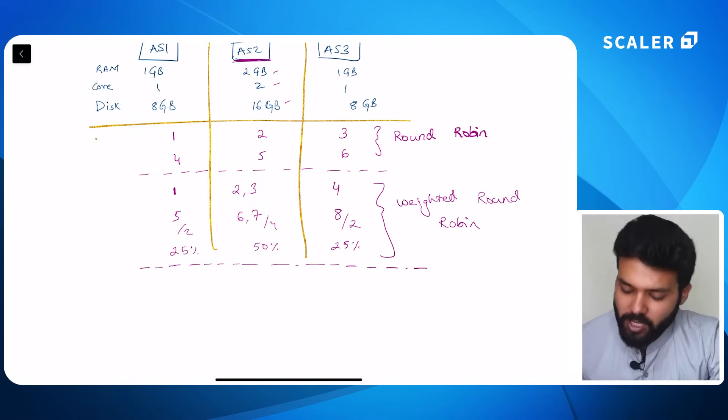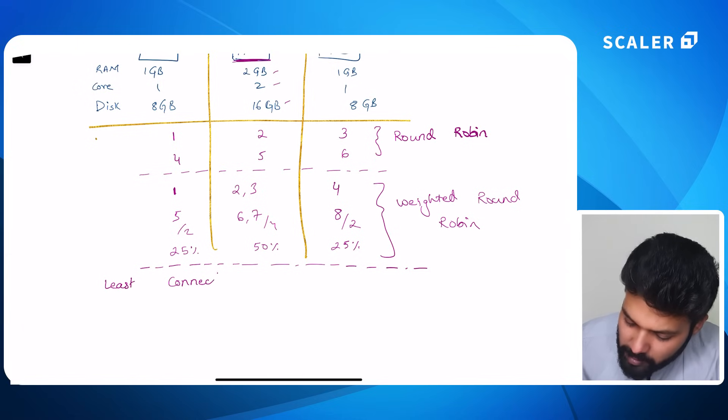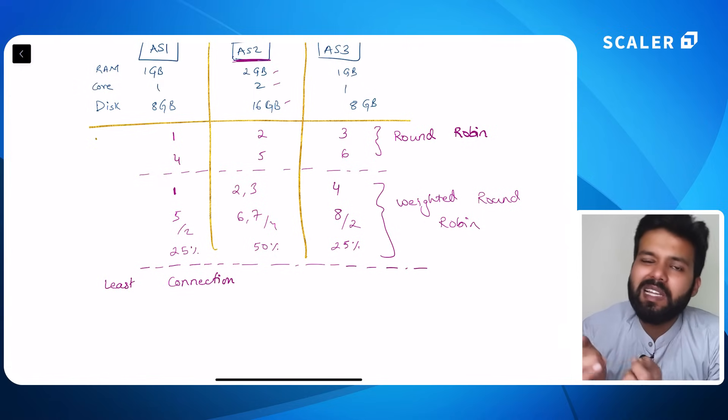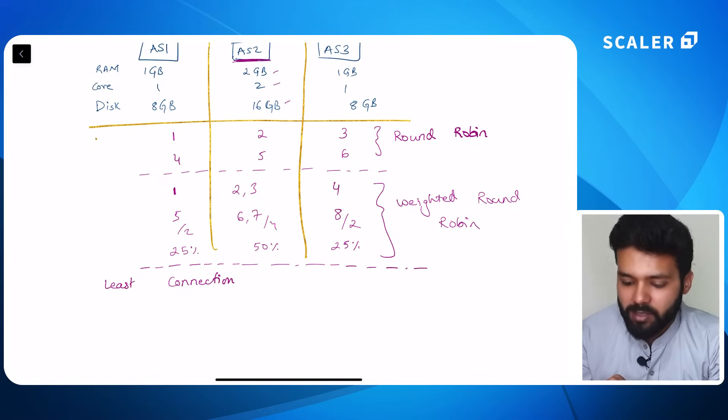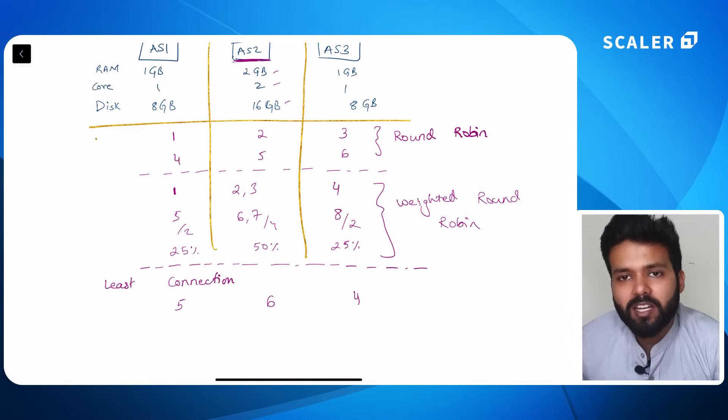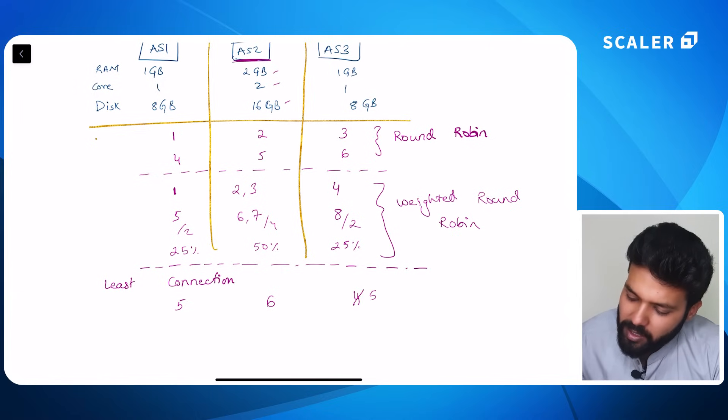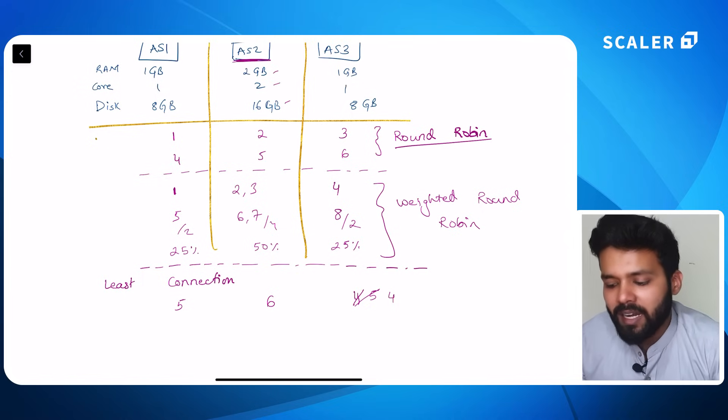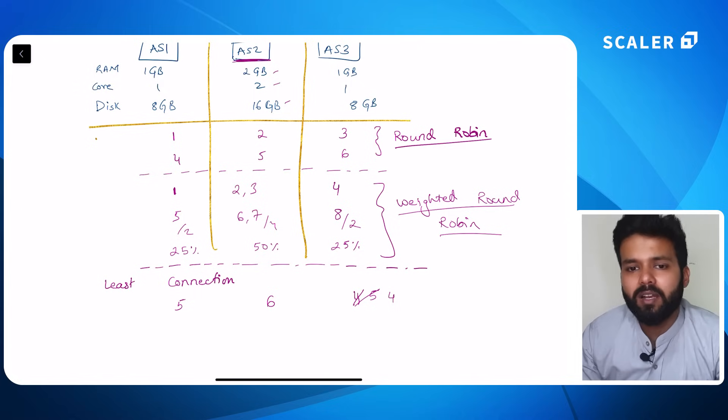The other routing strategy worth mentioning over here is a least connection routing strategy. This least connection looks at the number of active connections that are there with the application server and the server with least number of active connections will get the next new incoming request. For example, if there are 5 connections to application server 1, 6 connections to application server 2 and let's say 4 connections to application server 3, the next incoming request will go to application server 3 and this number will increase to 5. As soon as this request is processed, the number will again decrement to 4. Here also we have the same problem as in round robin strategy that we are not accounting for the capacity of the instance. To accommodate that, here also we have a weighted least connection routing strategy where you can assign weights to a particular application server and routing will be done based on that.